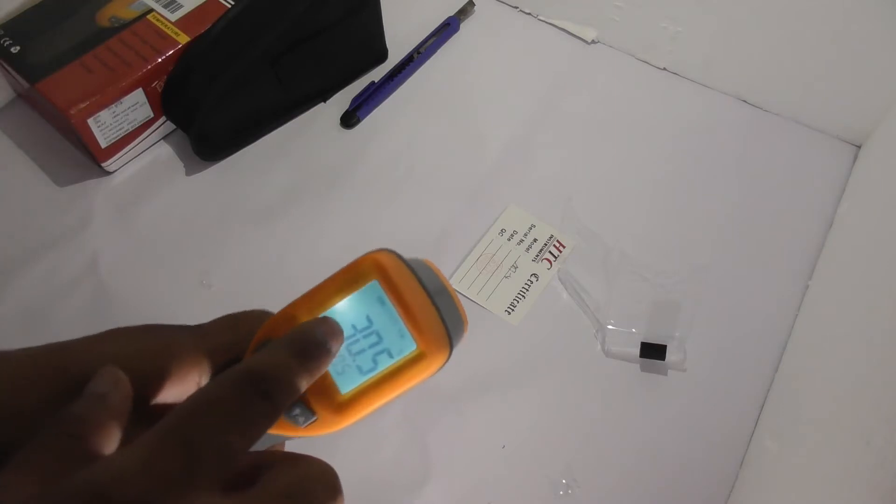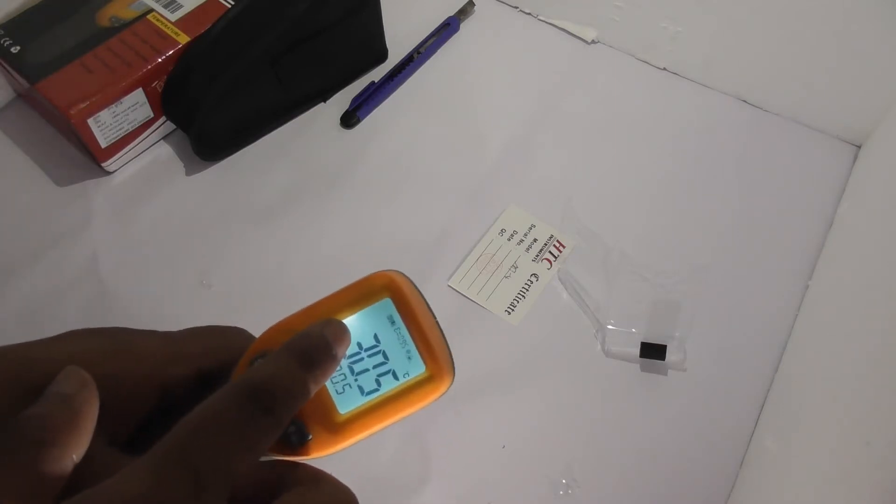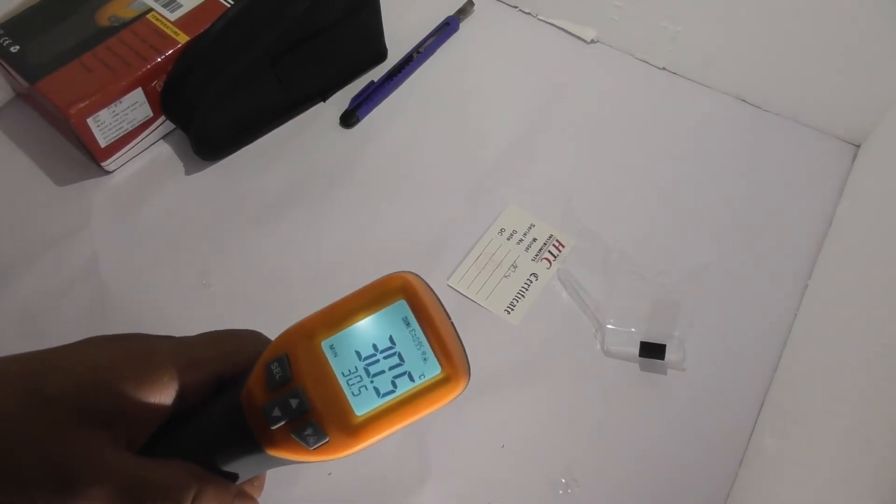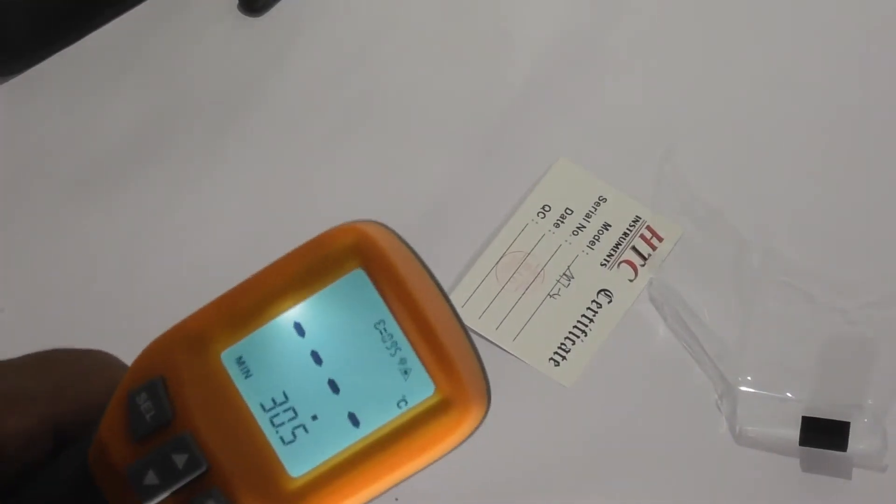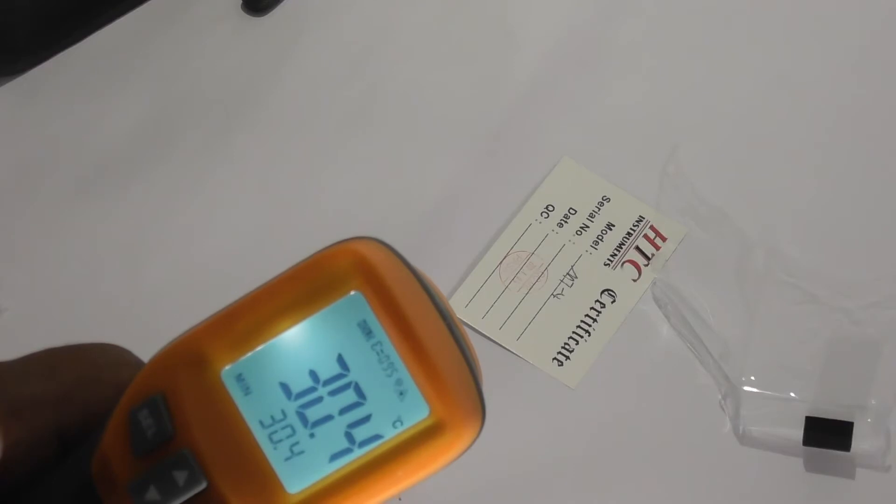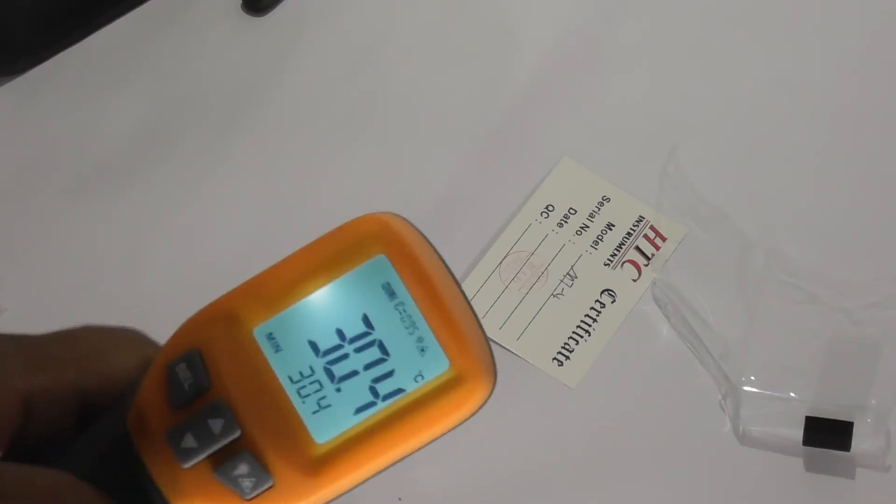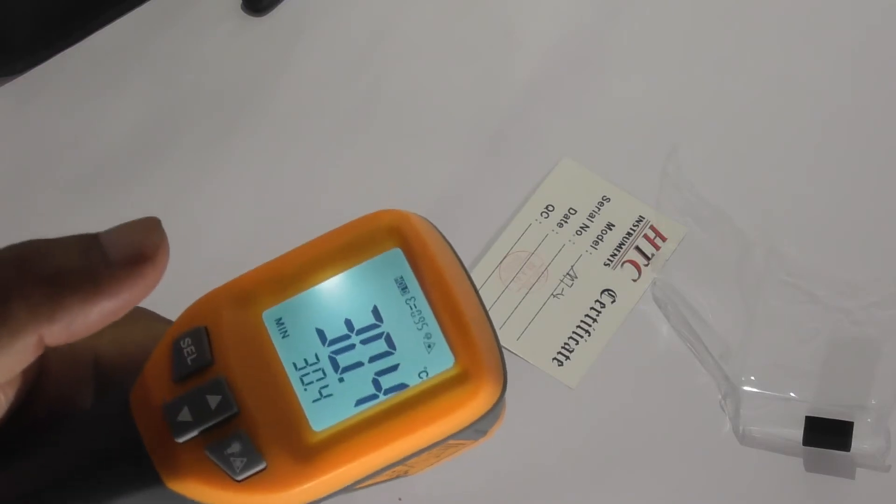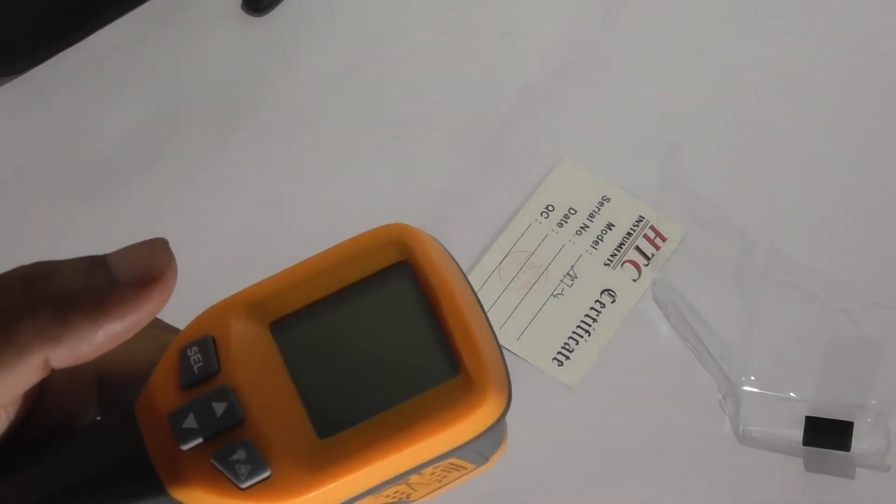As you can see, the hold icon is here. The meter will automatically shut off after 20 seconds. Now as you can see, after 20 seconds it automatically got shut off.